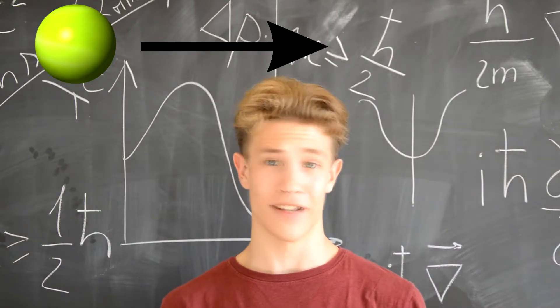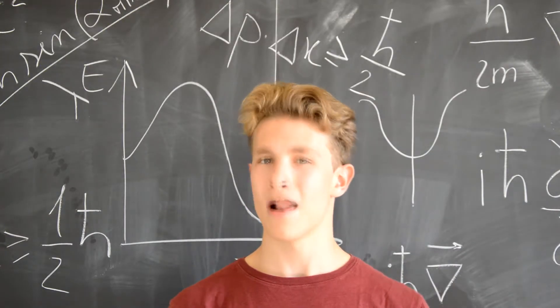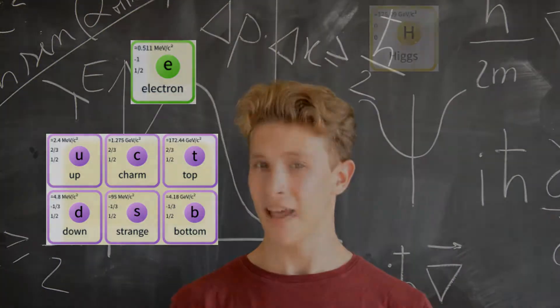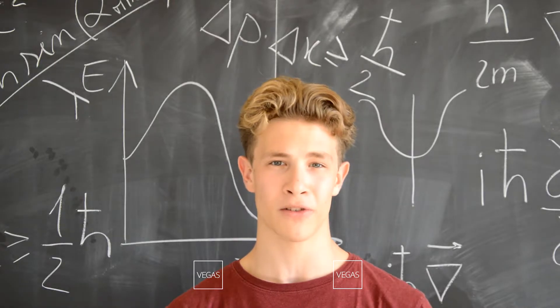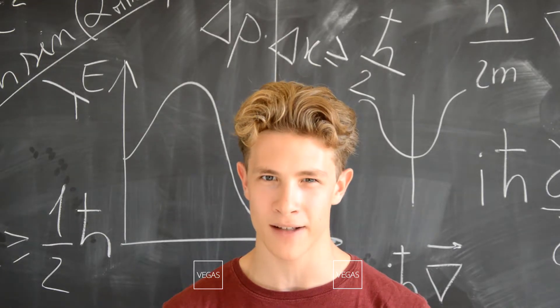Now, every kind of particle is associated to a different field. So we have an electron field, quark fields, Higgs field, muon field, gluon field. Depending on the kind of field, a certain amount of energy in a point can correspond to the presence or the absence of a particle.